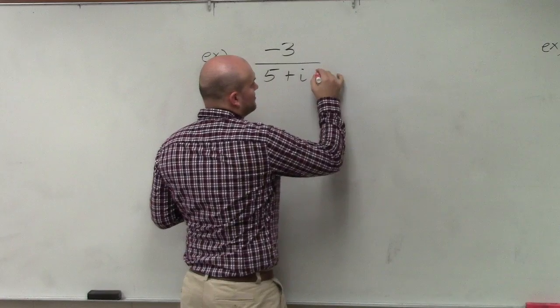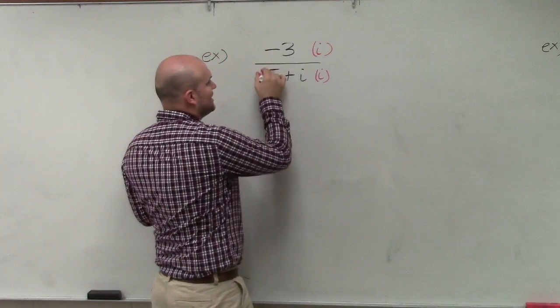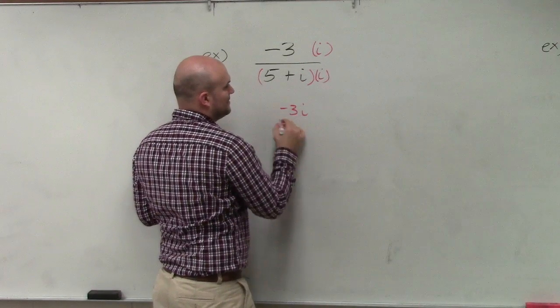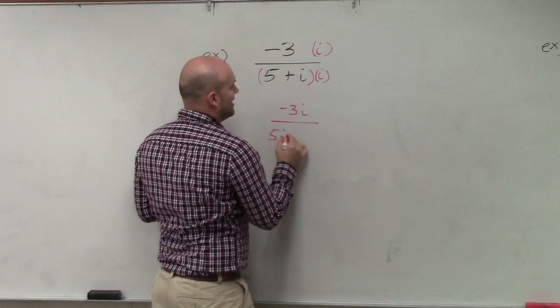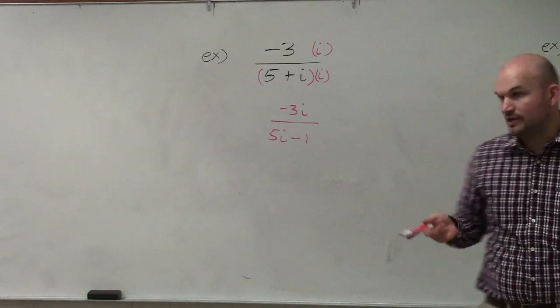So if the student multiplies by i on the top and the bottom, remember we have to apply distributive property here. So therefore I have negative 3i all over 5i minus 1, because i times i is i squared, which equals negative 1.